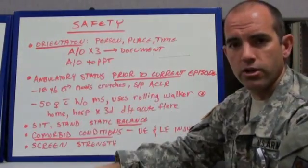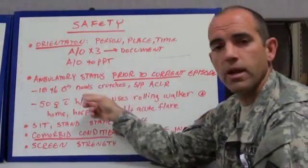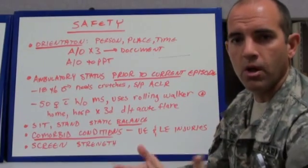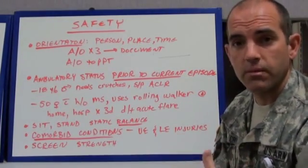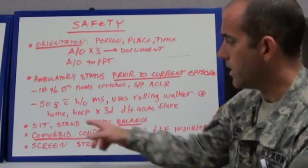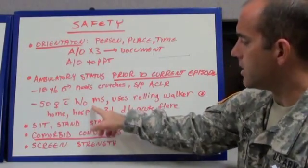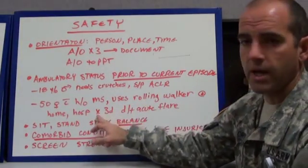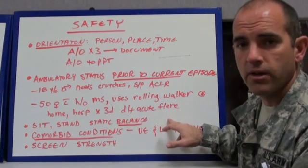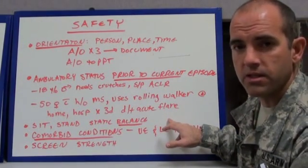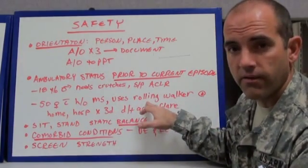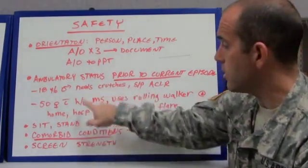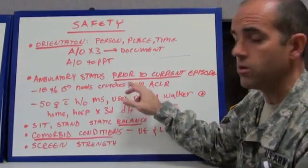Consider their ambulatory status prior to their current episode of care. For example, an 18-year-old who needs crutches status post an ACLR — you could pretty much presume they were walking before the surgery. However, if you have a 50-year-old female with a history of MS who at home uses a rolling walker and has been hospitalized for three days due to an acute flare, you probably shouldn't consider using crutches on her. She'll need to use at least the device she was using prior to coming to the hospital.